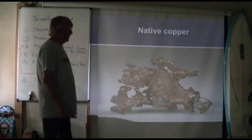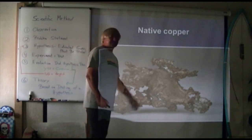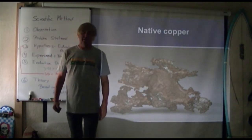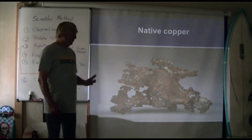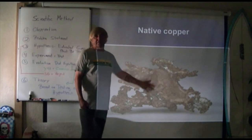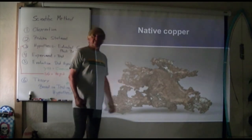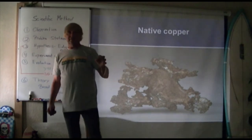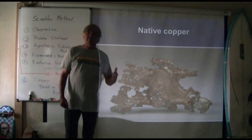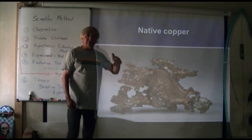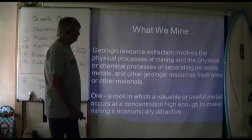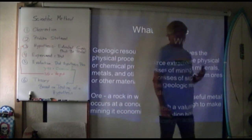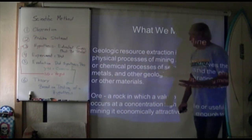Native copper occurs just naturally as copper, but it is unstable because the copper atom has a positive charge and oxygen — with a negative charge — comes along and oxidizes it. Take copper out of the ground and it's shiny, but when exposed at the surface oxygen binds itself to it. A good example is pennies: brand new pennies are shiny but over time they turn brown because oxygen has oxidized the copper.